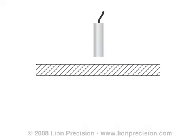High-resolution capacitive sensors enable very precise thickness measurements of conductive targets. There are two methods of measuring thickness with capacitive sensors. The first uses a simple single-channel measurement. The second uses two channels, which eliminates some potential error sources.